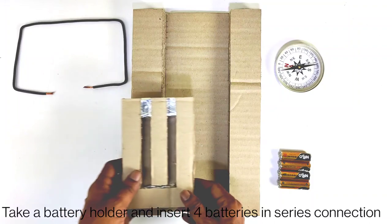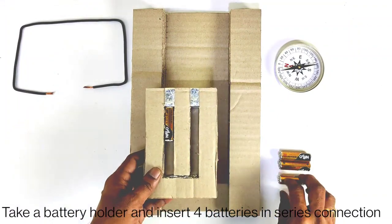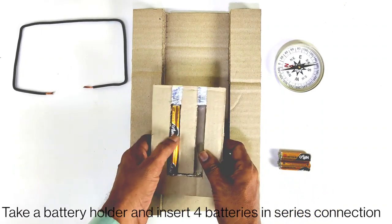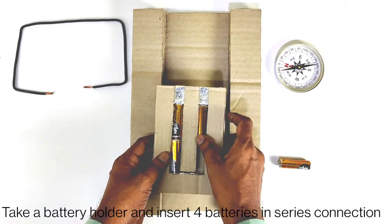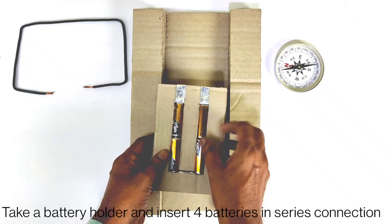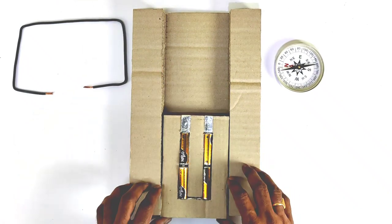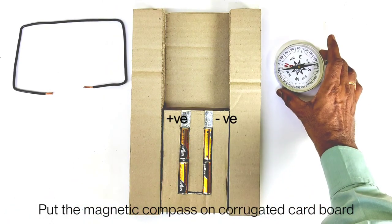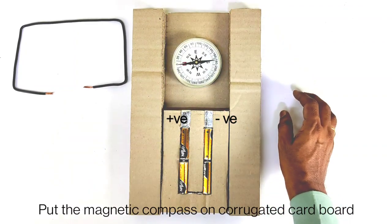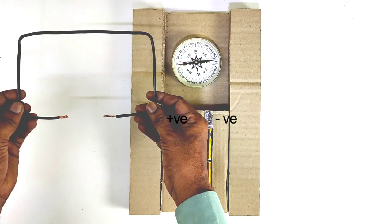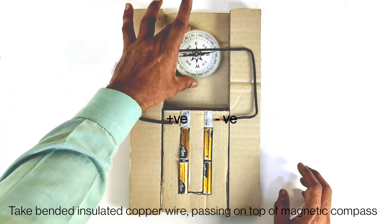Take a battery holder and insert four batteries in series connection. Put the magnetic compass on corrugated cardboard. Take bent insulated copper wire passing on the top of the magnetic compass.